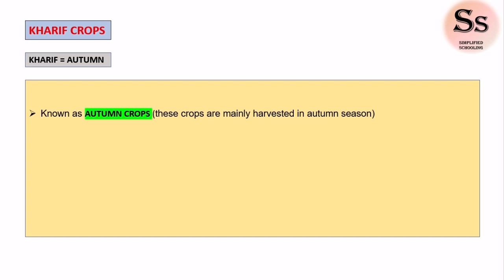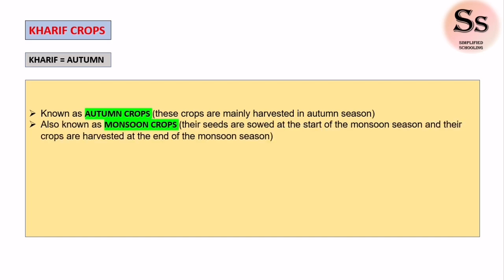Kharif crops are known as autumn crops because they are mainly harvested in the autumn season, that is in the month of September or October. These crops are also known as monsoon crops, as their seeds are sowed at the start of the monsoon season and harvested at the end of the monsoon season. The Kharif crop season in India differs from state to state; the general period of cultivation is from June to November.